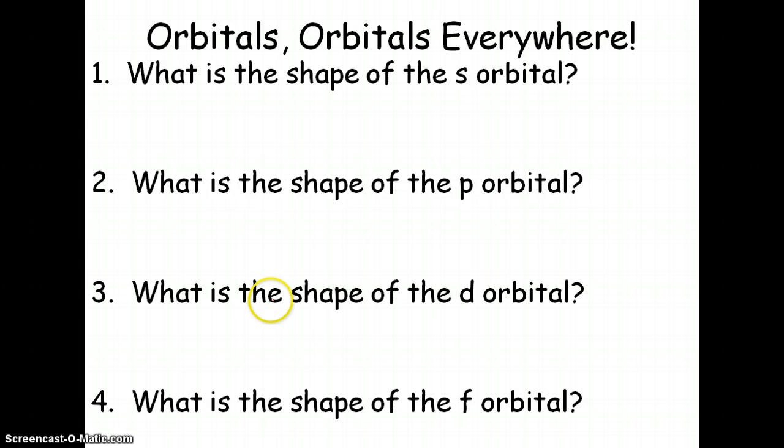All right, in this podcast I'm going to go over the Electron Study Guide. First off, let's talk about the shapes of all the orbitals. So if you remember, an S orbital is shaped like a sphere, which is basically a 3D circle. The P orbital is shaped like an infinity sign or dumbbell.